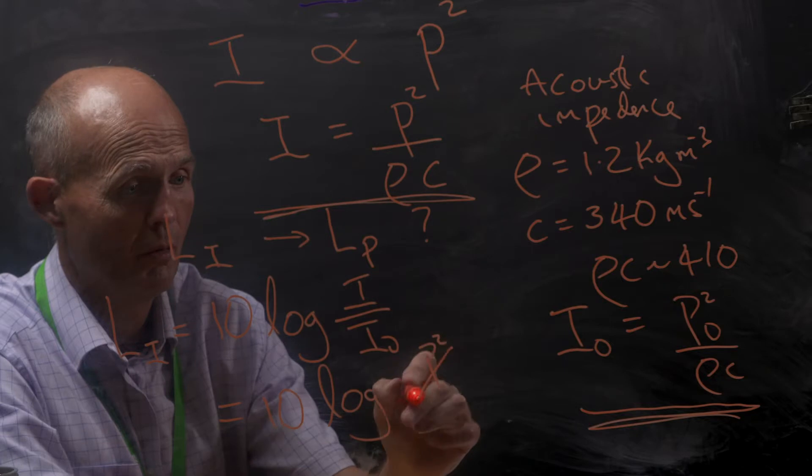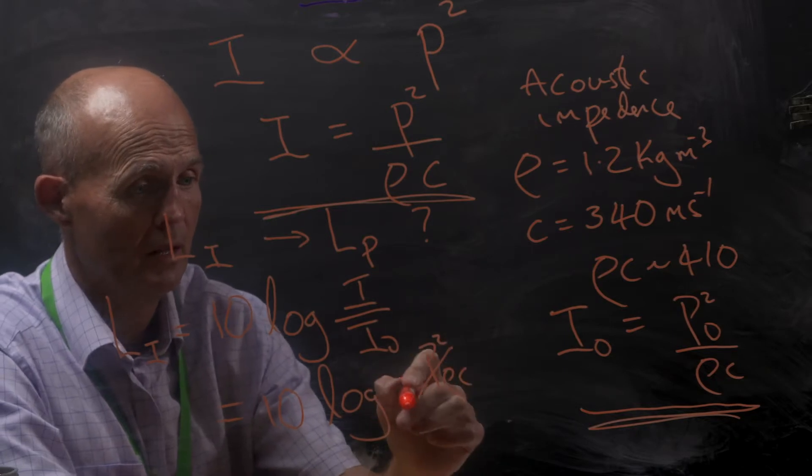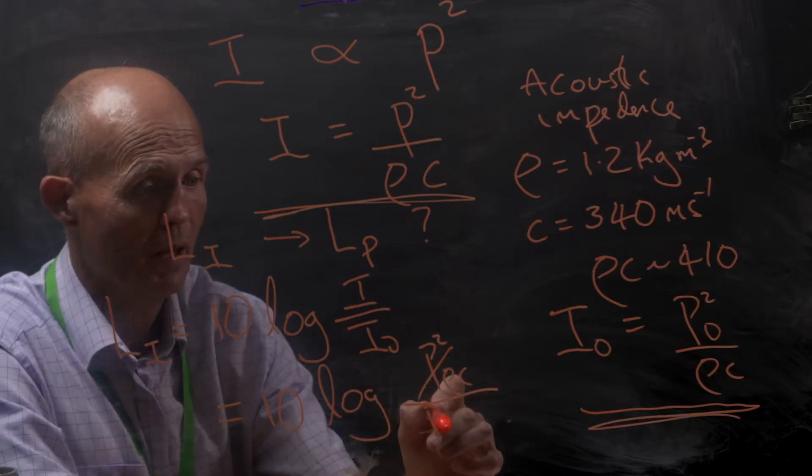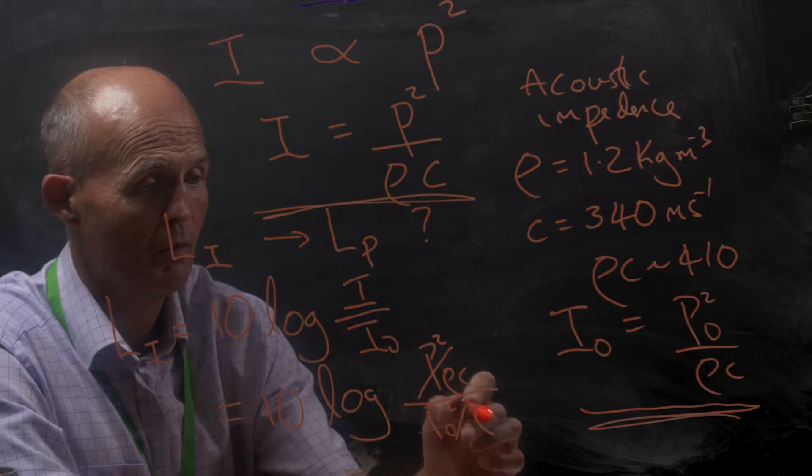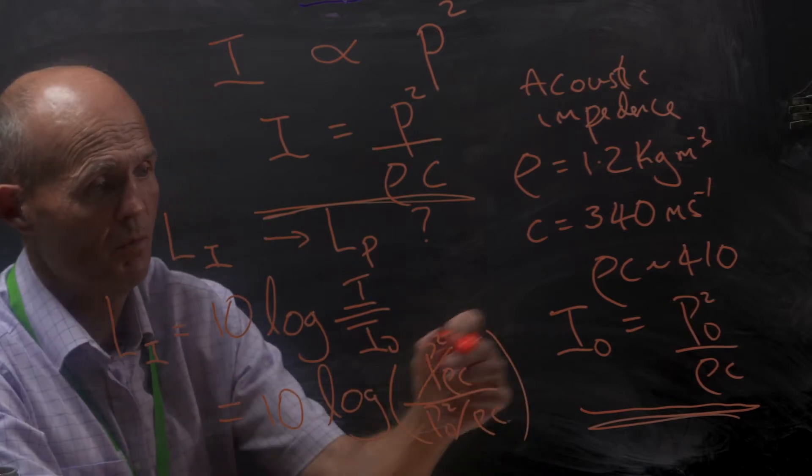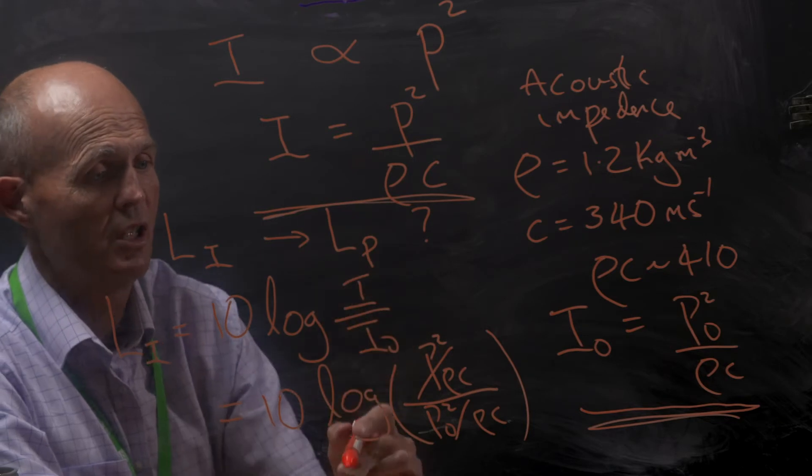So in terms of intensity, we have pressure squared over rho c divided by P naught squared over rho c. So that's the relationship we've got. We've just put these two formulas into this one.